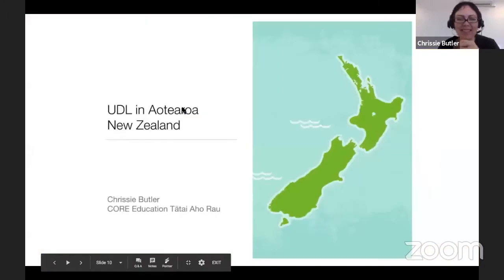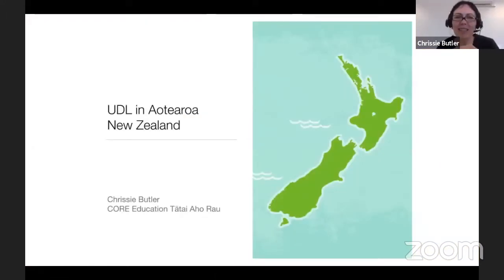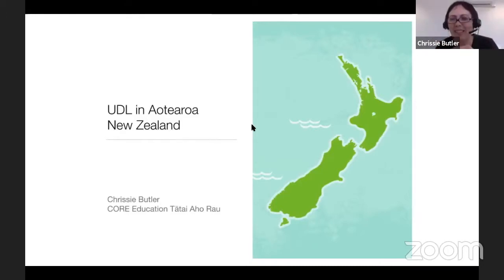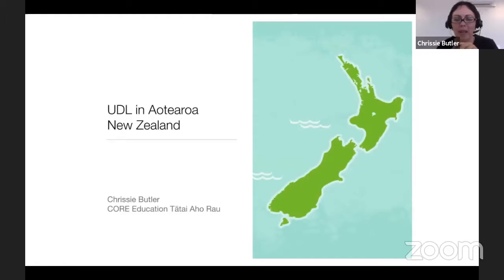This talk is about UDL in Aotearoa New Zealand. Aotearoa is the indigenous name for New Zealand, situated in the south of the South Pacific. Right now it is seriously hot here. I want to acknowledge from the outset that I'm one thread in a much larger weave — this is my perspective, and others would have quite a different story.